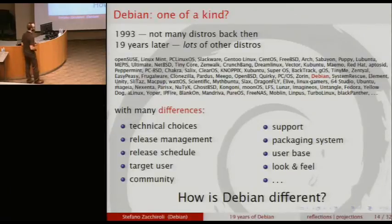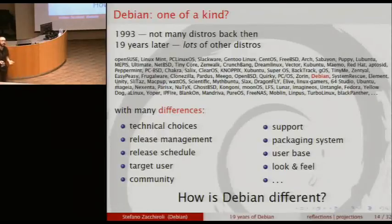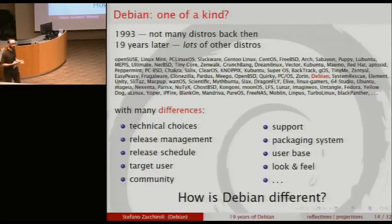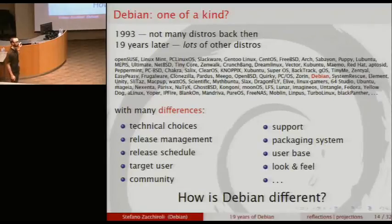Debian is not the only distribution out there. If you look at distribution review sites, you can find hundreds of distributions — the concept has been quite popular. Every distribution has different traits: different release cycles, different target audiences, different communities, different look and feel, different choices of user interfaces — which is a topic for really popular trolls on the internet.